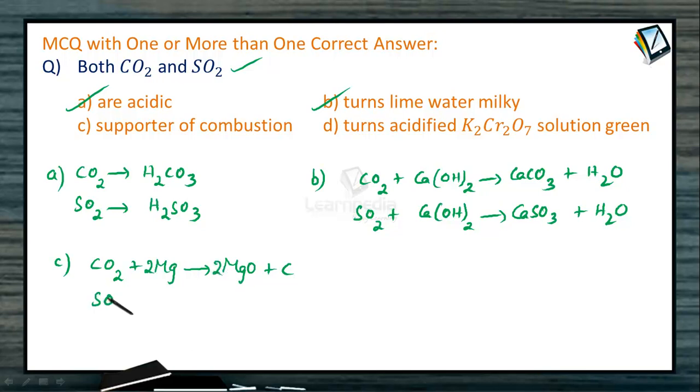Similarly, when magnesium burns in the atmosphere of sulfur dioxide in order to give magnesium oxide and sulfur. For both CO2 and SO2, this is also correct statement. Then in option D, both of them turns acidified K2Cr2O7 solution green.